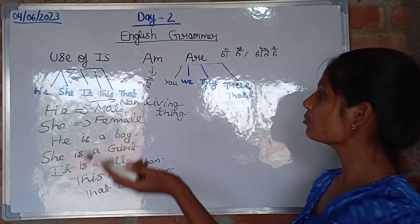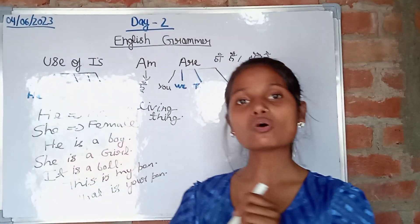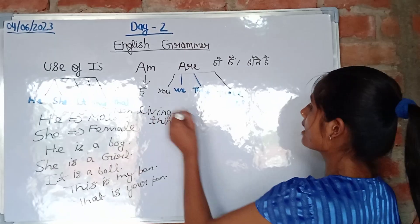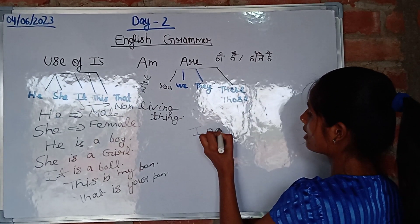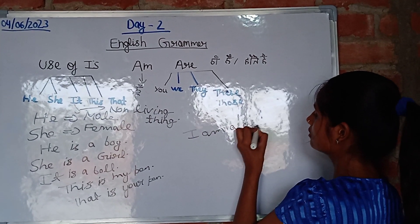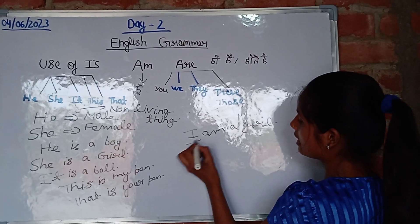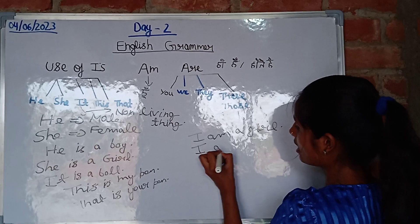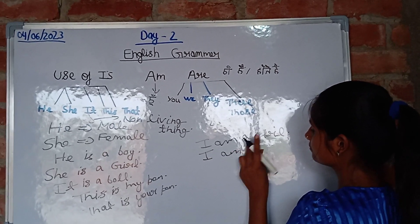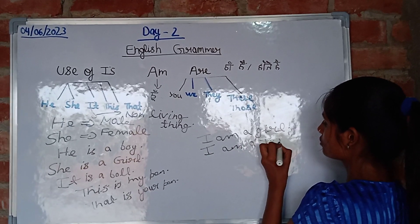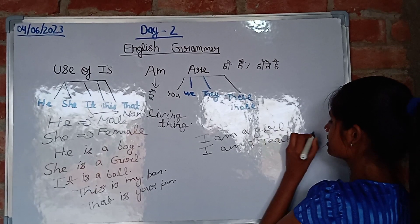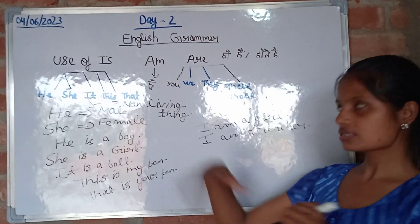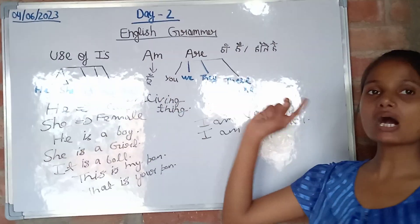Now we can talk about 'am'. 'Am' is used for sharing about ourselves. For example: I am a girl, I am a teacher. Here I am expressing myself — who I am. So I think that is clear.